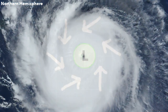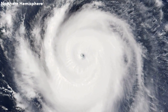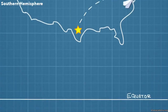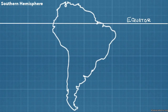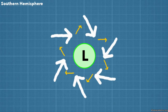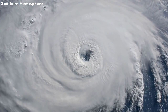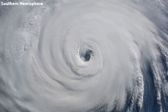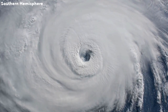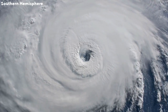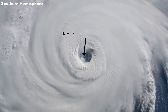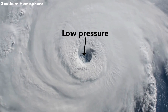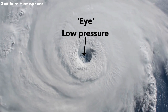These tropical cyclones always rotate counterclockwise in the Northern Hemisphere. And in the Southern Hemisphere it's the exact opposite — winds deflect to the left, making the storms rotate clockwise. Do check out our video on the Coriolis effect for more details. The center of the storm is a low pressure area — an area of calm surrounded by fierce winds and rain. This is the eye of the storm.